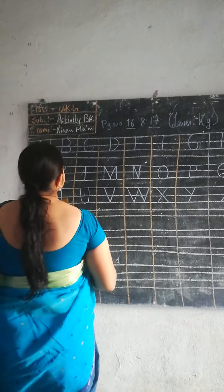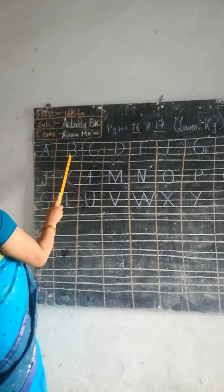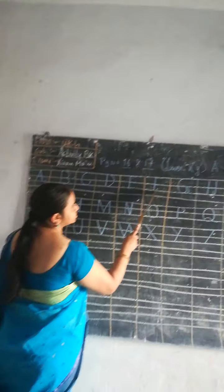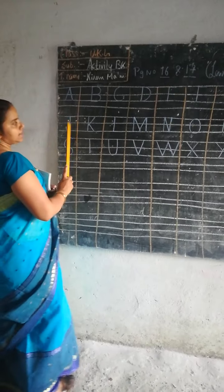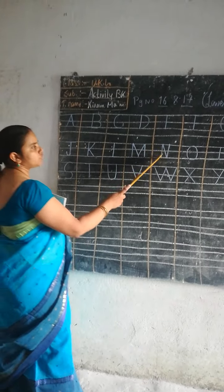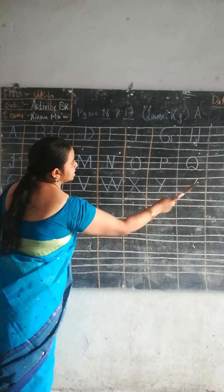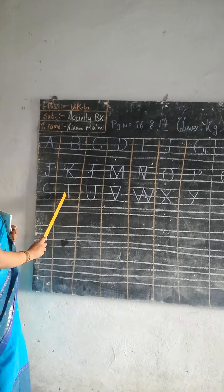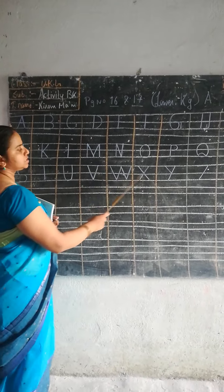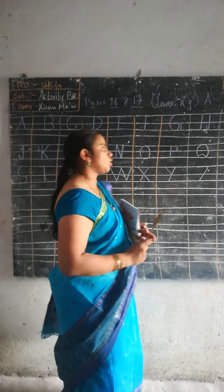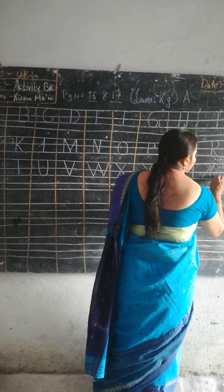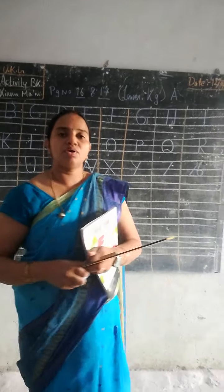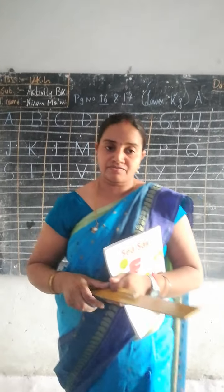So how many letters are there? There are 26 letters. Let's count: 1, 2, 3, 4, 5, 6, 7, 8, 9, 10, 11, 12, 13, 14, 15, 16, 17, 18, 19, 20, 21, 22, 23, 24, 25, 26. So all together, there are 26 letters in our English alphabet.